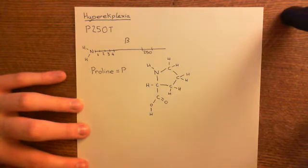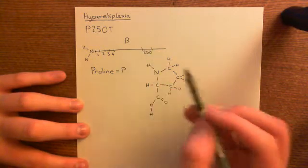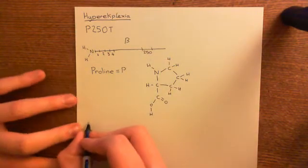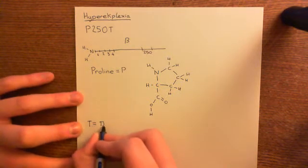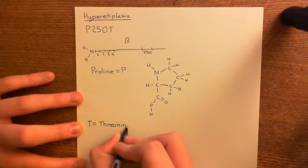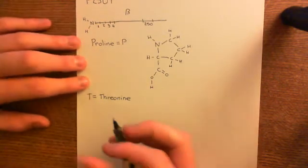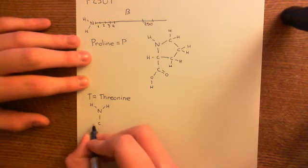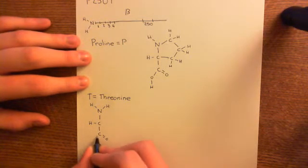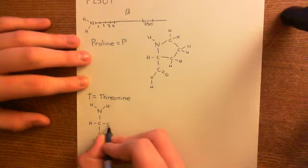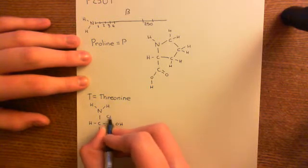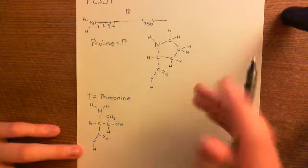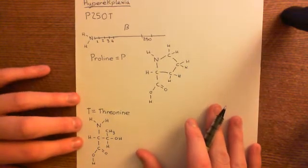So there was a proline at position 250 — single letter code P — but it's now undergone mutation. It's mutated to T. T stands for the amino acid threonine, and you will see how different threonine is from proline. Threonine has a more conventional amino acid structure: here's the amino group, the alpha carbon with a hydrogen, the carboxylic acid group, and then a carbon with an alcohol group, a methyl group, and a hydrogen coming off it. It's very, very different from proline. So you have changed the proline at position 250 to a threonine.